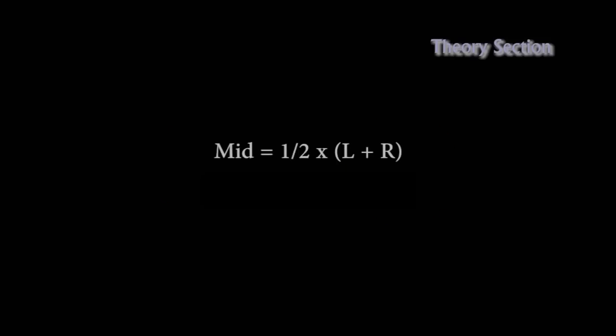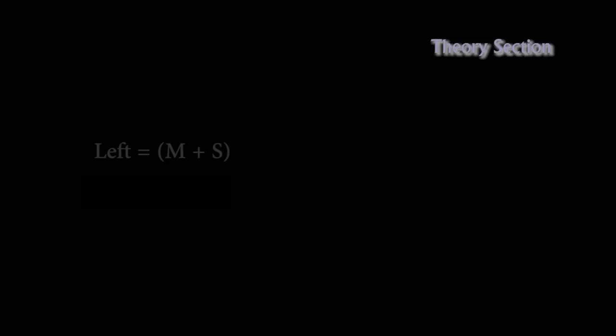Here are the formulas. Mid equals one-half times (left plus right). Side equals one-half times (left minus right). To decode back to stereo: left equals mid plus side, and right equals mid minus side.